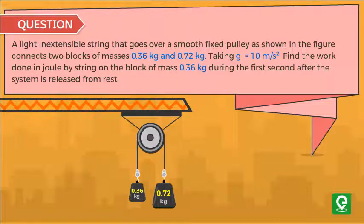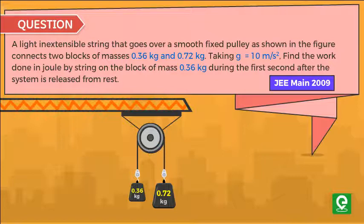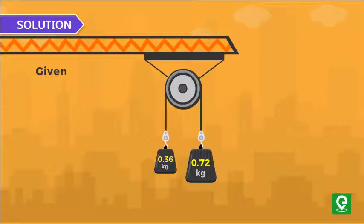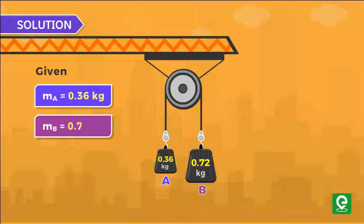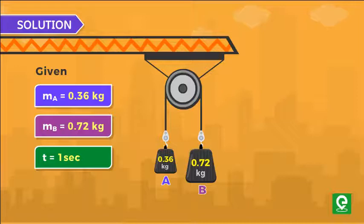Solution: We are given mass of block A equal to 0.36 kg and mass of block B equal to 0.72 kg. Time given is equal to one second.